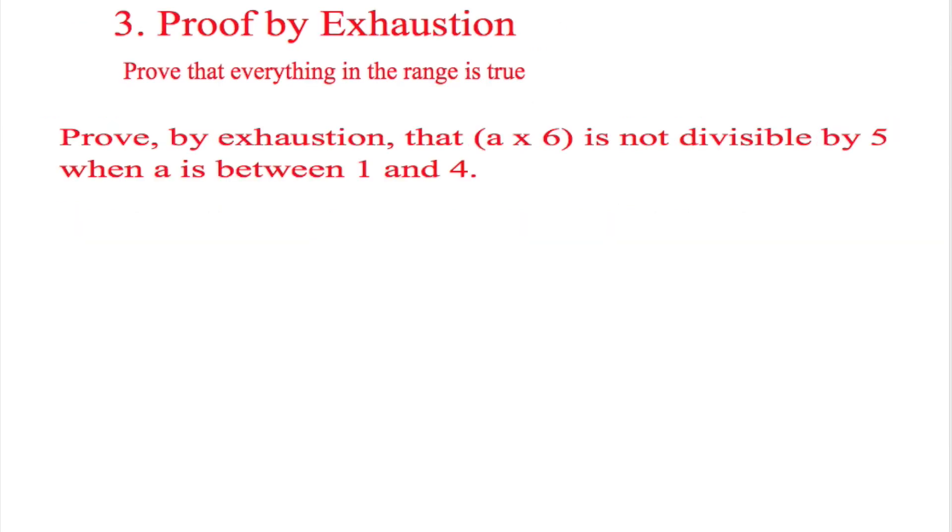This type of proof is proof by exhaustion, and this is essentially proving that everything in the range is true. So a question I've got here is prove by exhaustion that a times 6 is not divisible by 5 when a is between 1 and 4.